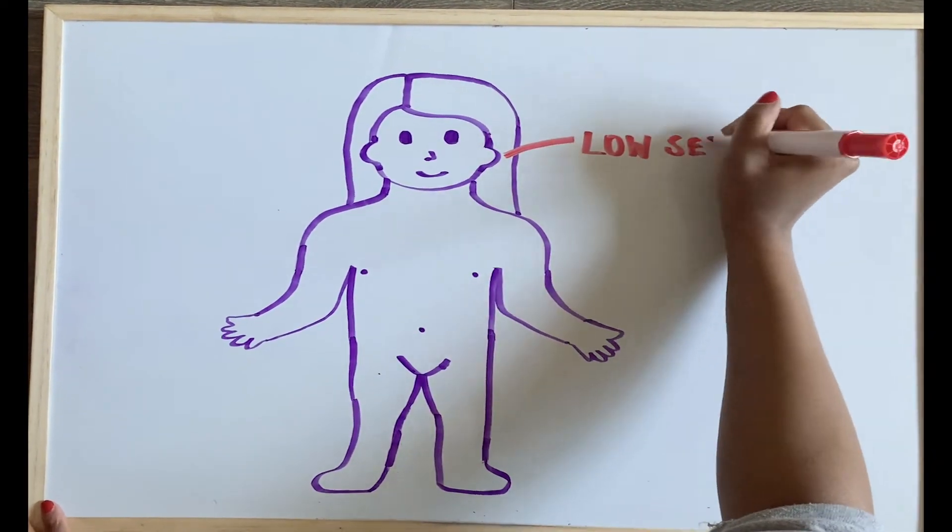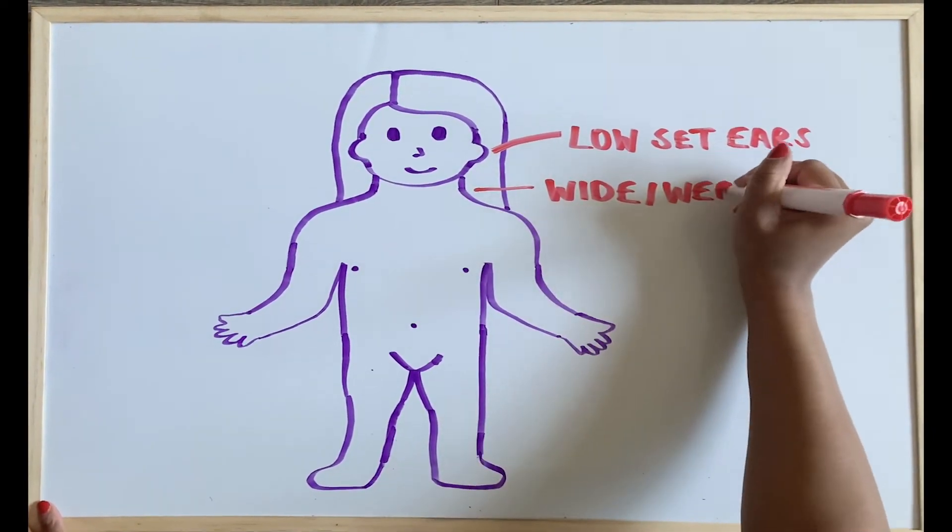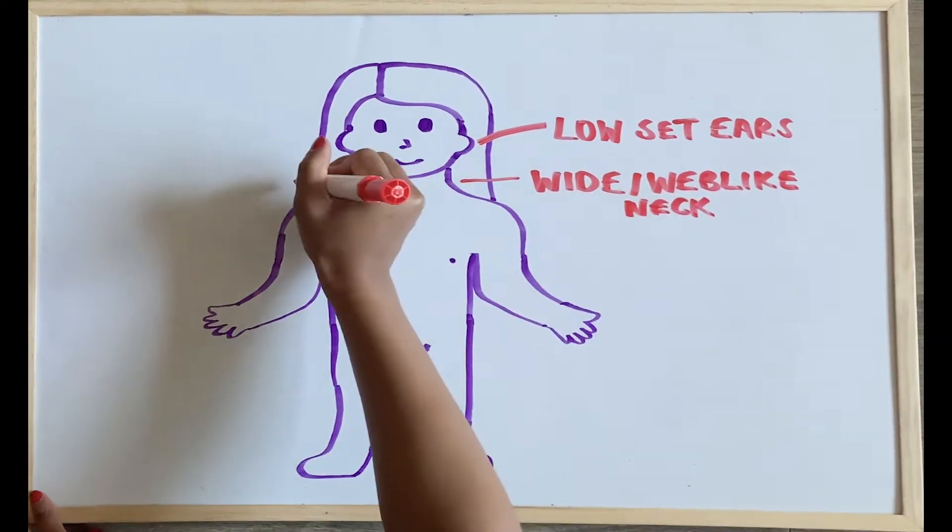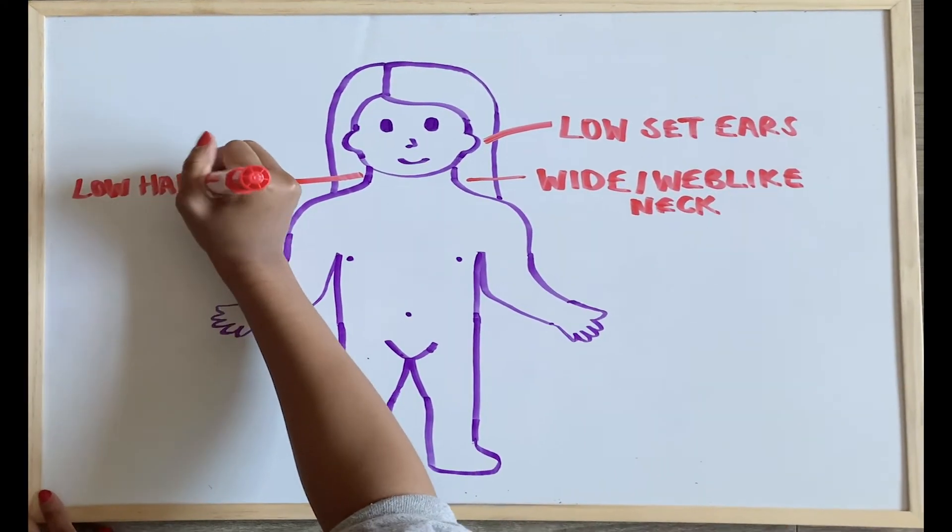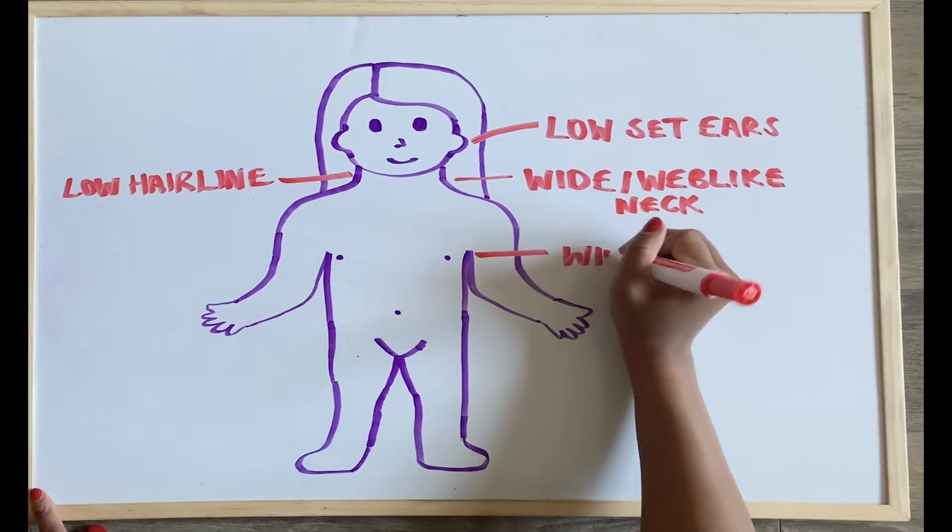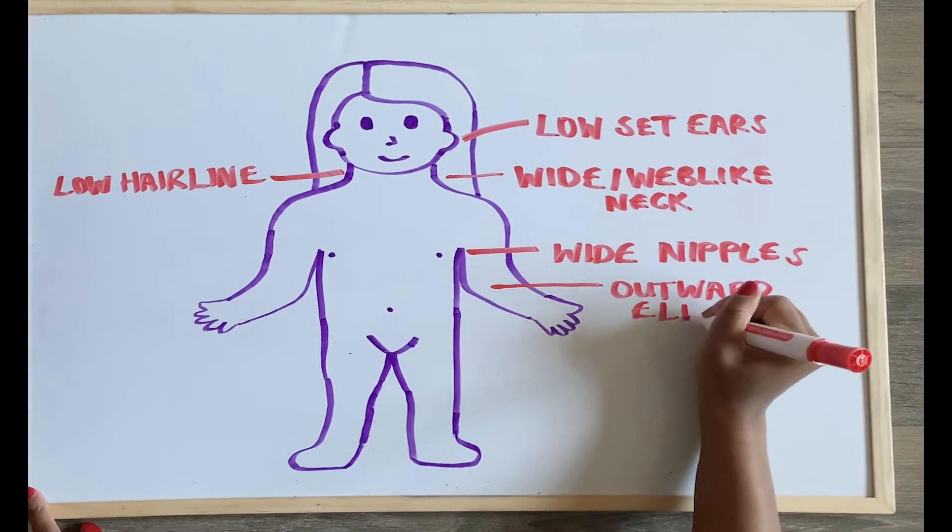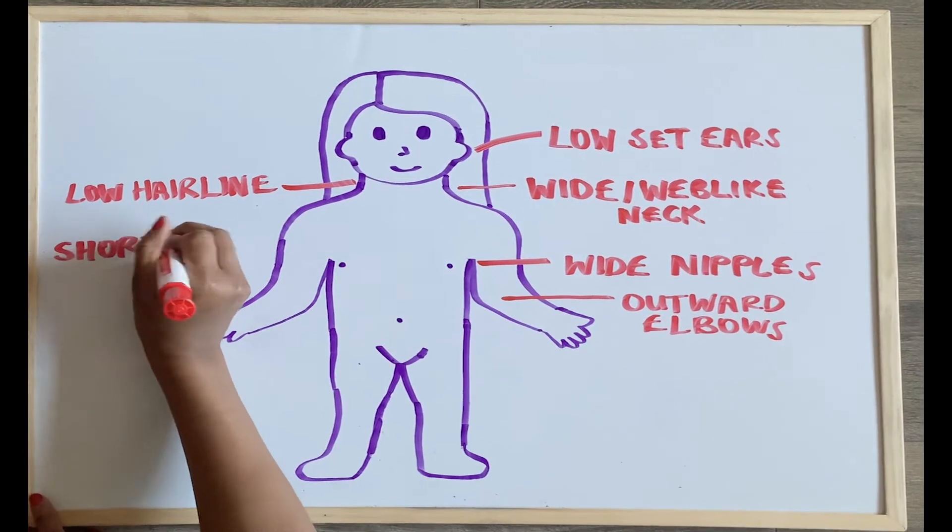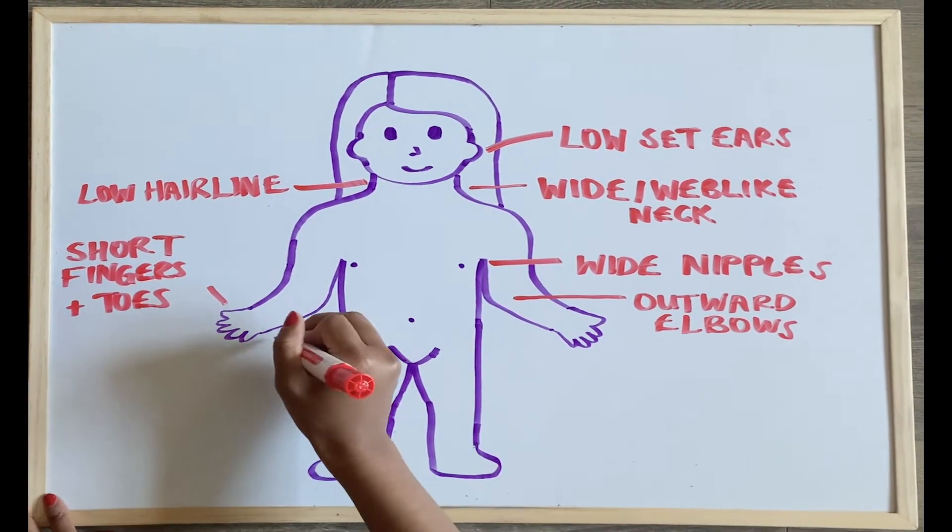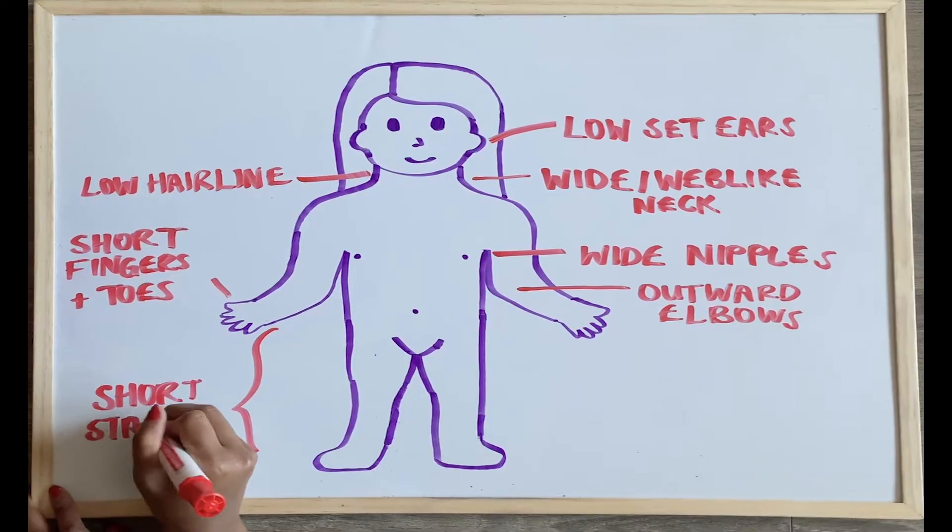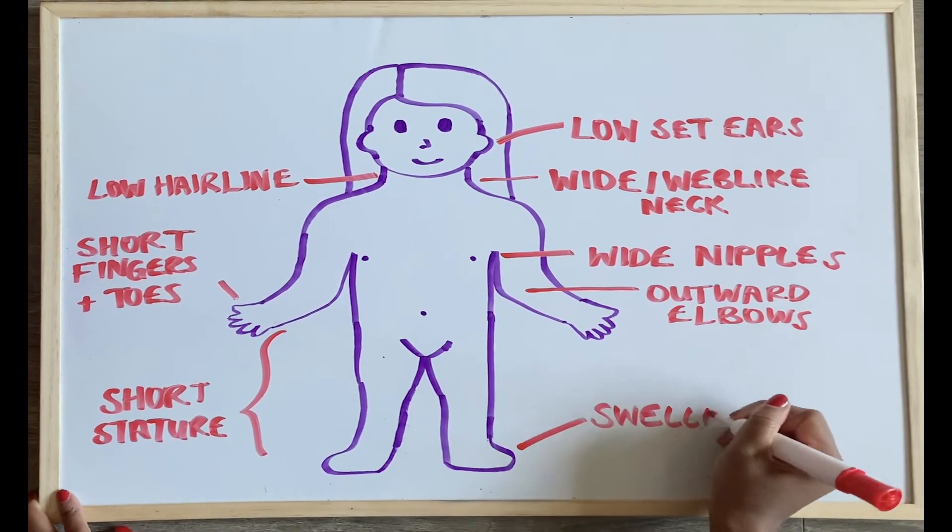So, what are the symptoms of Turner syndrome? Some of the most common symptoms at birth are low-set ears, a wide or web-like neck, low hairline at the back of the neck, a broad chest with widely spaced nipples, arms that turn outward, short fingers and toes, short stature, and swelling of the hands and feet.